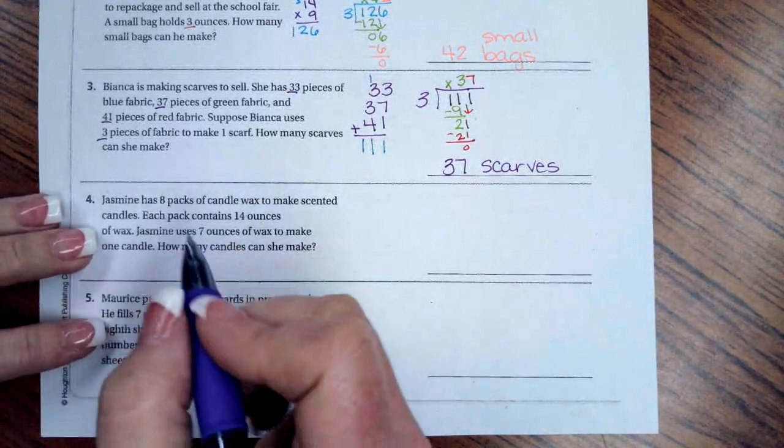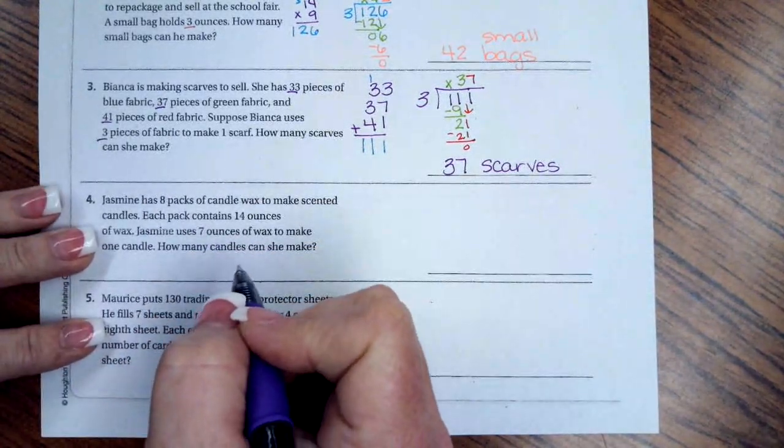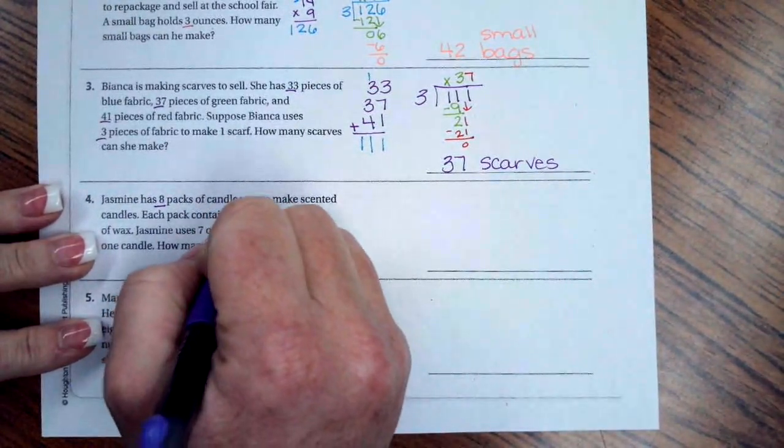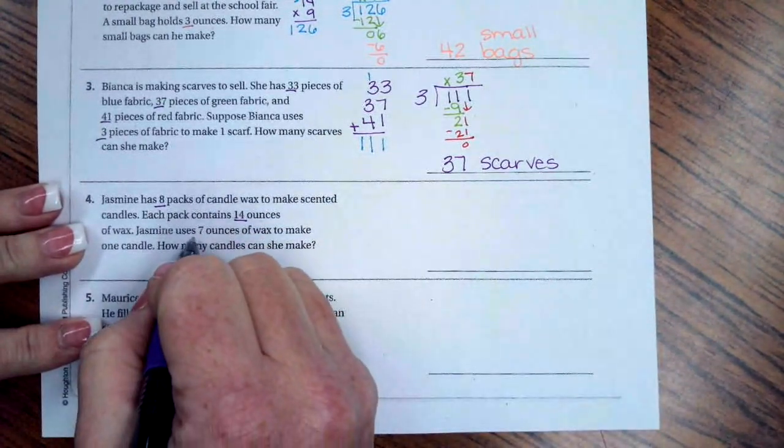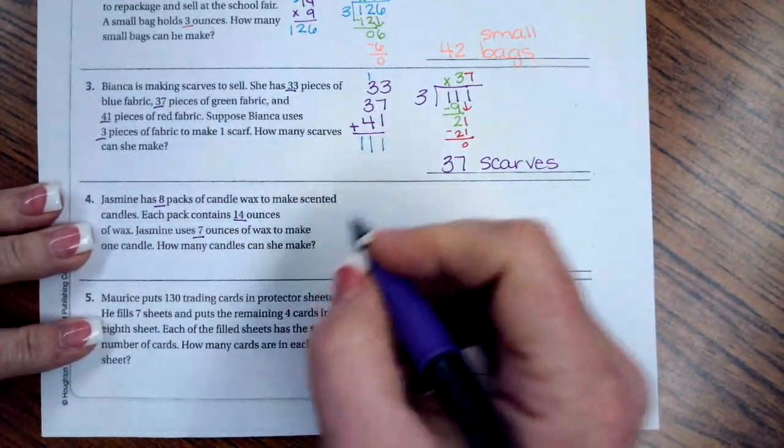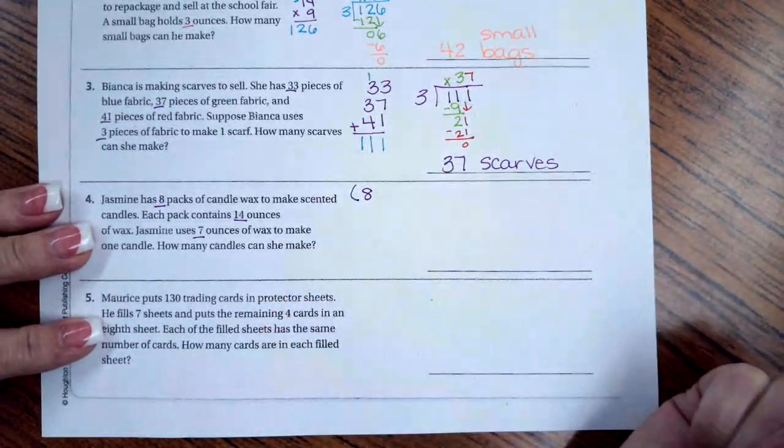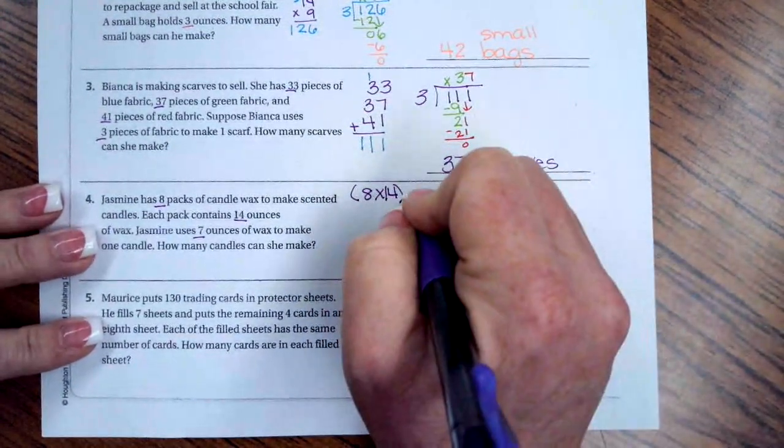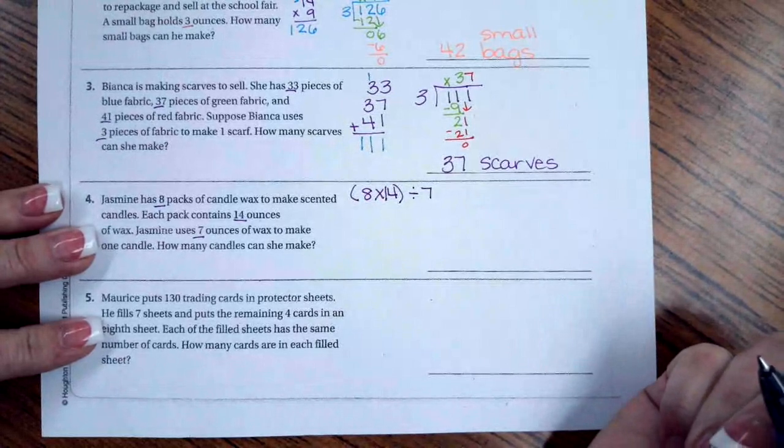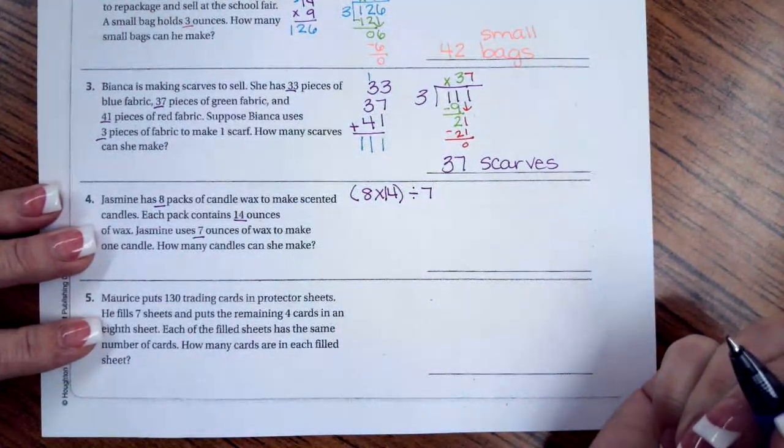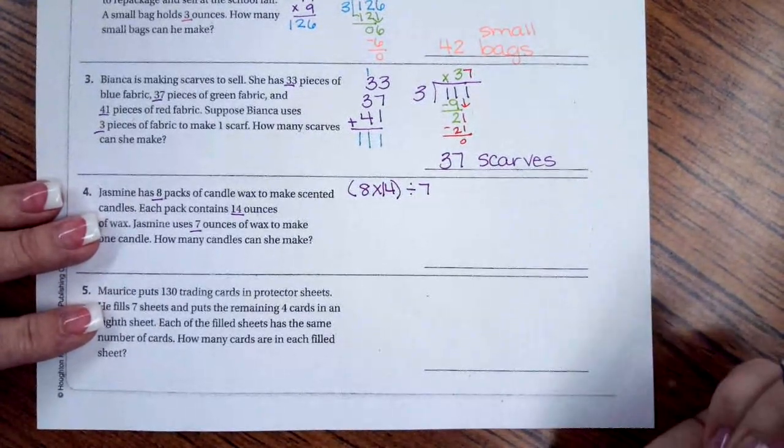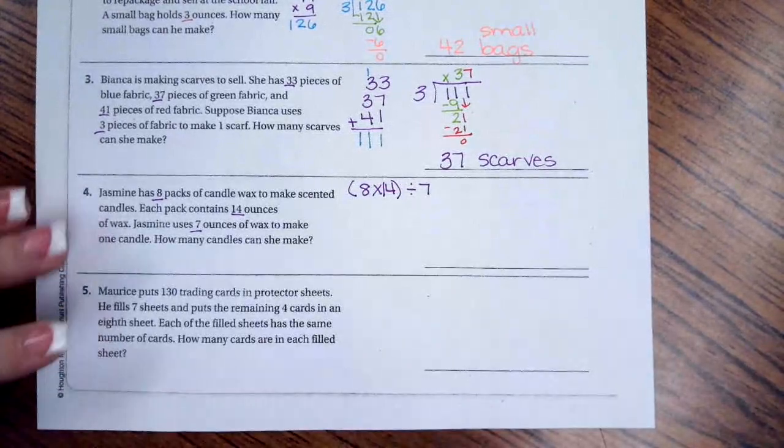So the next one, I'm going to underline the numbers that you need to worry about, and then you are going to put the problem together. So Jasmine has eight packs of candle wax to make scented candles. Each pack contains 14 ounces of wax. Jasmine uses seven ounces to make a candle. So she has eight packs of candle wax. Each pack has 14 ounces, and then she uses seven ounces per candle to make each candle. So how many candles can she make? You tell me, guys.